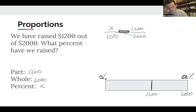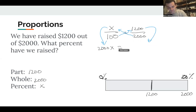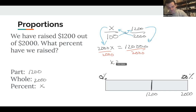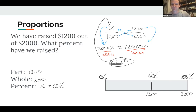Using a proportion: X over 100 equals 1,200 over 2,000. Cross multiplying: 2,000 times X is 2,000X, and 100 times 1,200 is 120,000. X is being multiplied by 2,000, so we divide both sides by 2,000 and get X equals 60. We've raised 60% — that's in the percent location of our proportion.